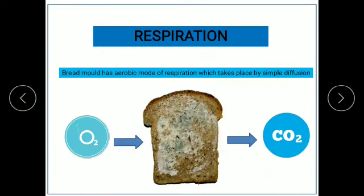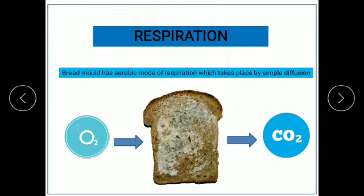Let us now study the respiration in Rhizopus. Bread mold has an aerobic mode of respiration which takes place by simple diffusion. Aerobic mode of respiration means respiration in the presence of oxygen. They respire by taking in oxygen and giving out carbon dioxide. They are always seen growing on the top layer of the bread so that they can respire easily, as lots of oxygen is available.